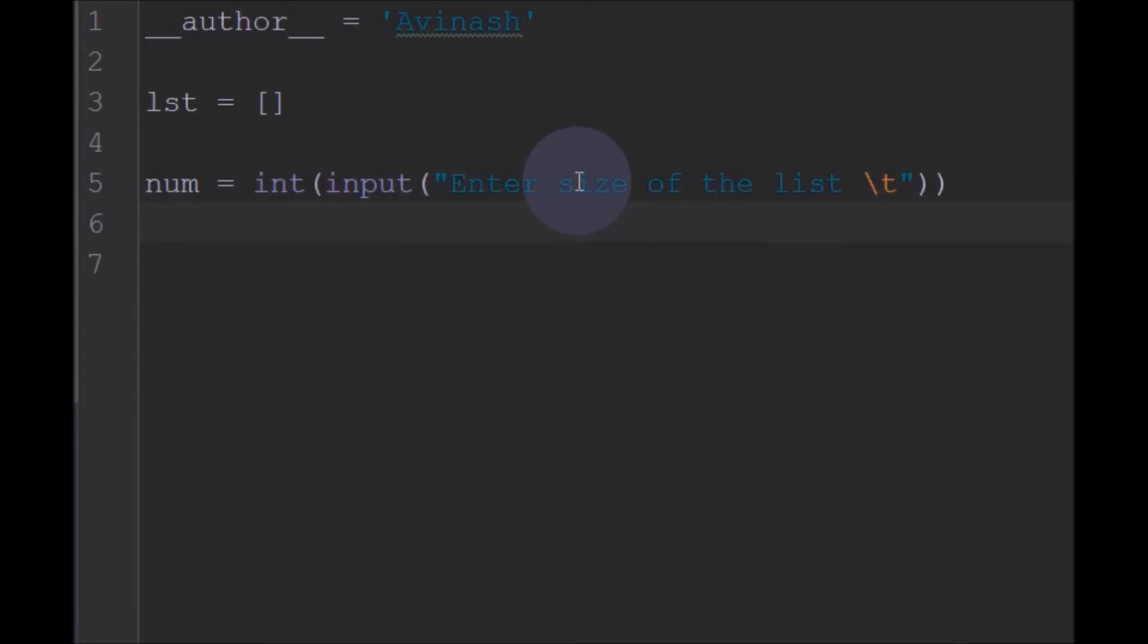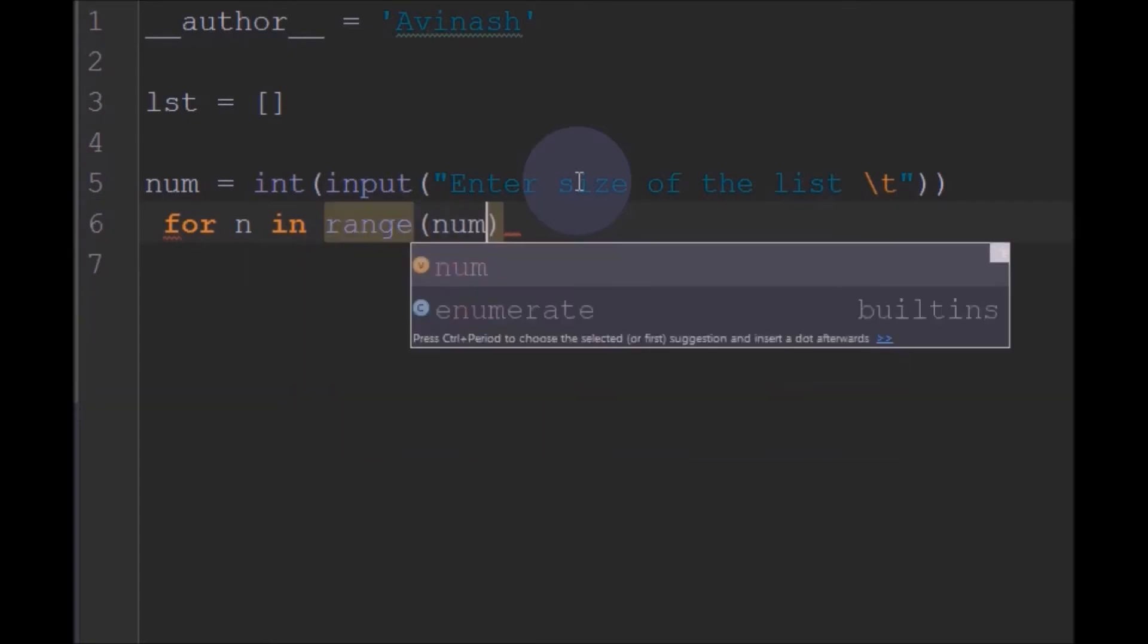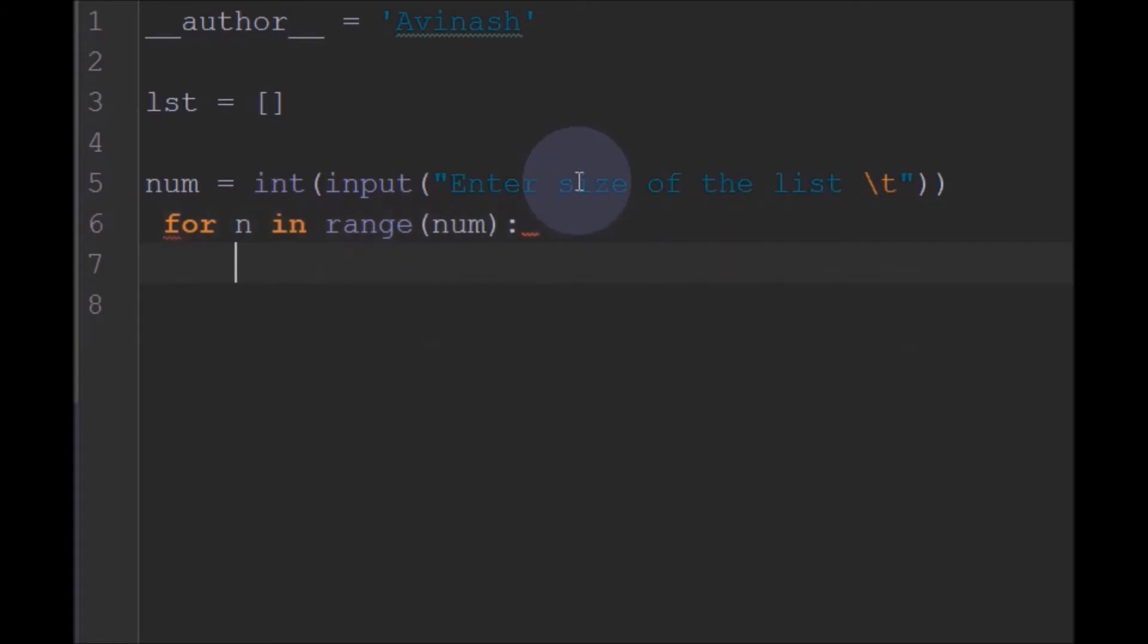So I will write a for loop: for n in range of this number. What I will do is, for n in range number, we need to read each of the input, each of the number entered.